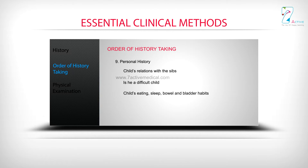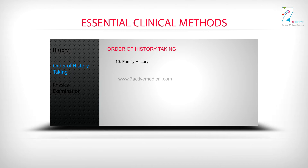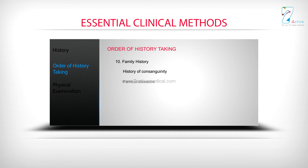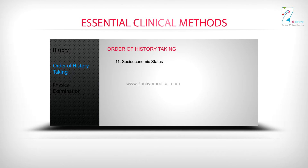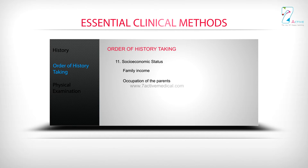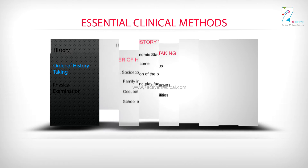Number 9 - Personal history: child's relations with siblings, is he a difficult child, child's eating, sleep, bowel, and bladder habits. Number 10 - Family history: history of consanguinity, familial diseases, and inherited disorders. Number 11 - Socioeconomic status: family income, occupation of the parents, school and play facilities.